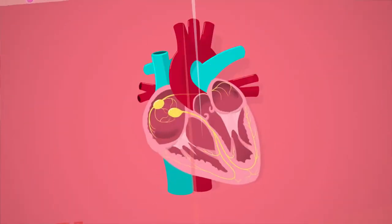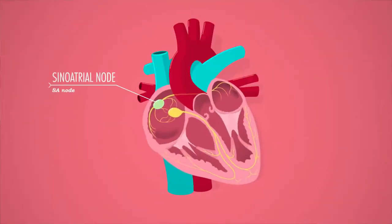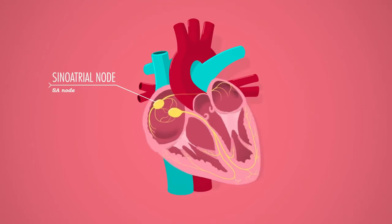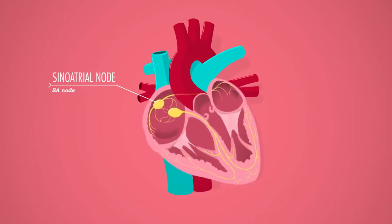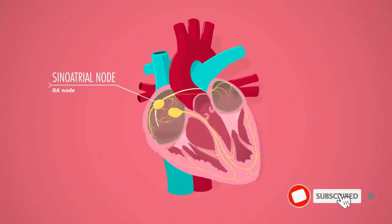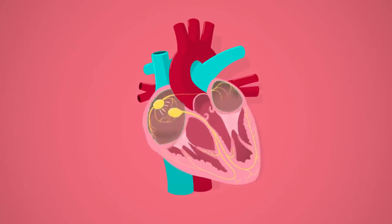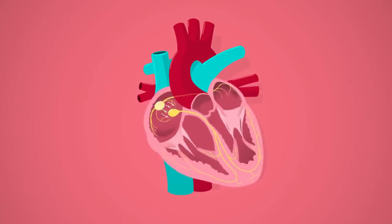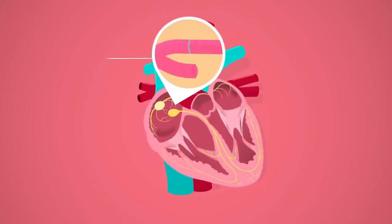And those fast, leaky cells are found in the sinoatrial node, or the SA node, up in the right atrium. After those pacemaker cells make themselves fire, they spread their electrical impulses to cardiac muscle cells throughout the atria.